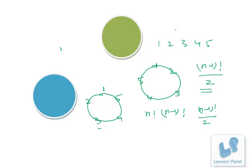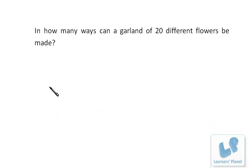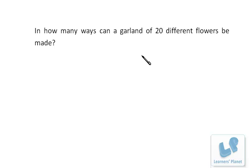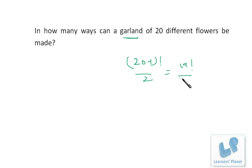Let's take a very simple question to brush up the concept: 20 different flowers can be arranged in a garland. Since it's a matter of a garland, we apply n minus 1 factorial divided by 2, which gives 19 factorial divided by 2. You don't have to calculate anything further — the answer is 19 factorial divided by 2.